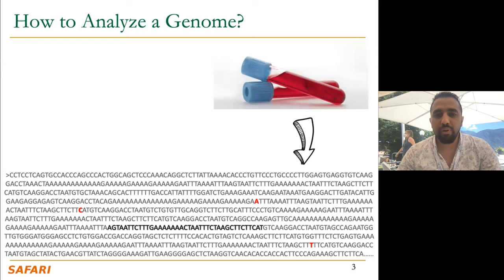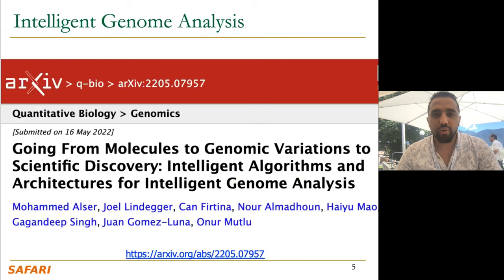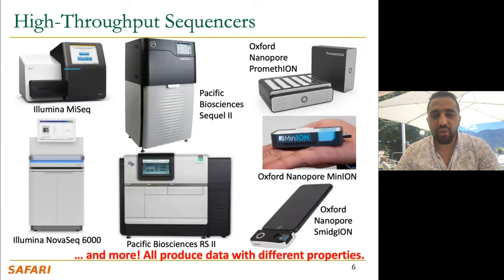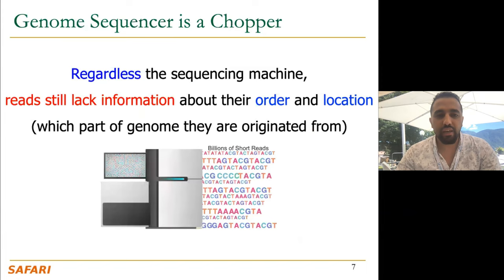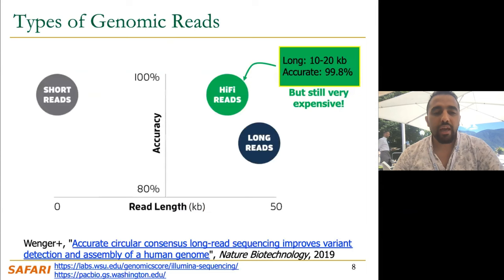As you know, to analyze a genome, unfortunately until today we don't have any machine that you give it a genetic sample and it gives you the full sequence of your DNA. We discussed some of the reasons in our recent paper, so you are welcome to check it. Whatever machine you use for sequencing or for reading your data, you still get pieces of your DNA and not the entire DNA. Reads still lack information about their order, location, and the original DNA, so you don't know which piece comes before which piece — you really need to link these pieces and build back your DNA.